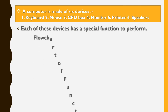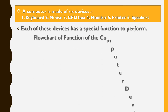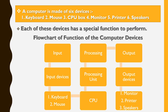Flowchart of the function of computer devices: Input — input devices: keyboard and mouse. Processing — processing unit: CPU. Output — output devices: monitor, printer, and speakers.